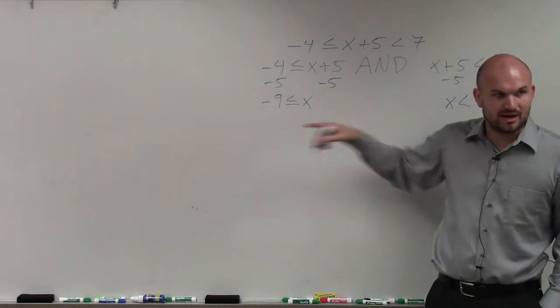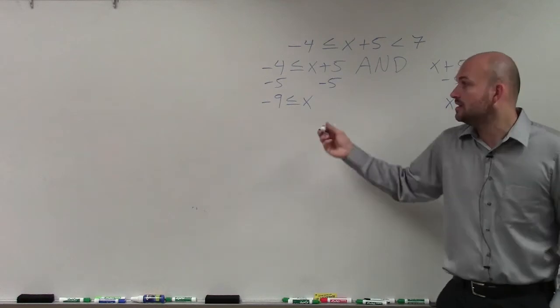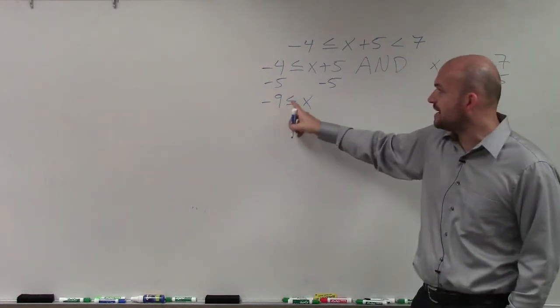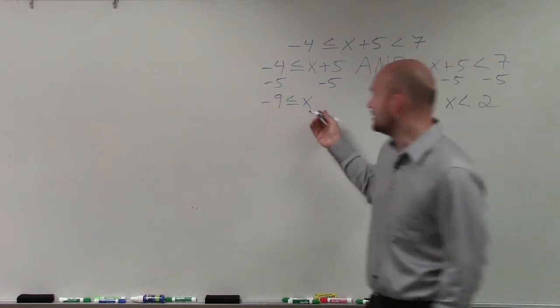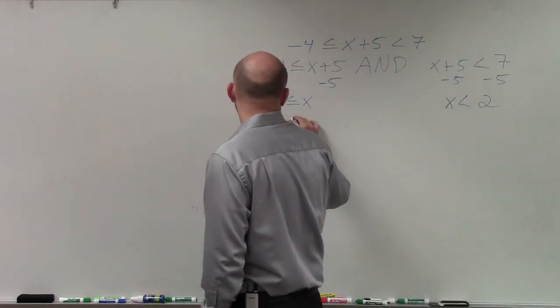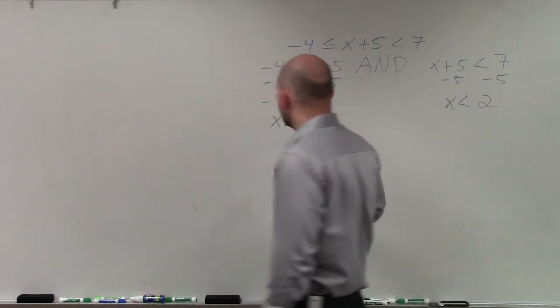So here, I am not pointing my arrow to the left. Right? So to rewrite this, notice that negative 9 is less than or equal to x. Or x is greater than or equal to negative 9. So I'll rewrite this like that.